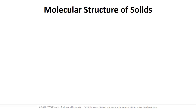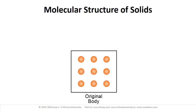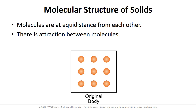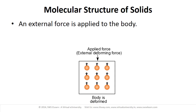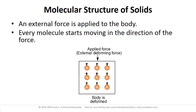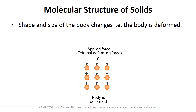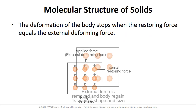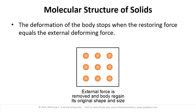Consider an elastic body shown here. Molecules are at equidistance from each other; however, there is attraction between molecules. When we apply an external force to the body, every molecule starts moving in the direction of the force, and therefore the shape and size of the body changes — the body is deformed. Due to the change in distance from their equilibrium position, molecules create an opposite restoring force. The deformation of the body stops at the point when the restoring force equals the external deforming force.